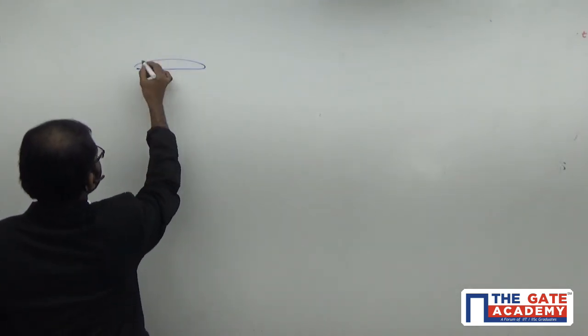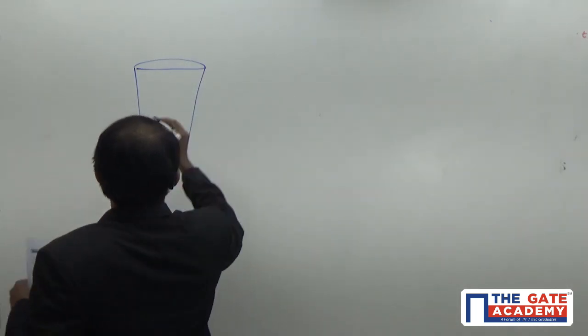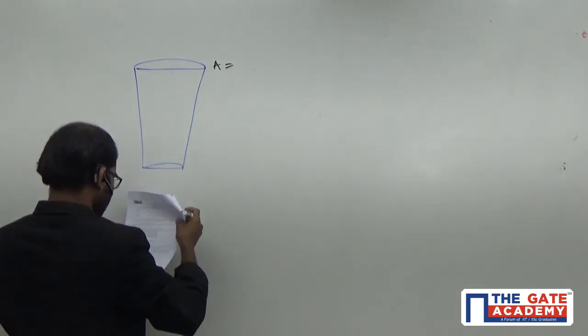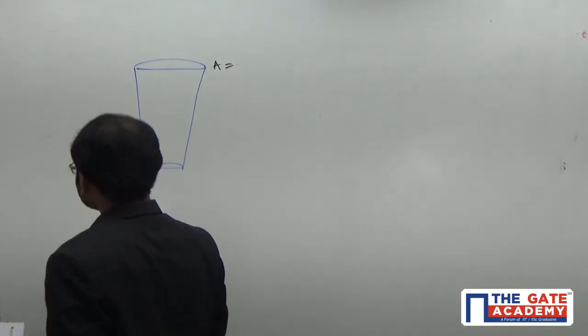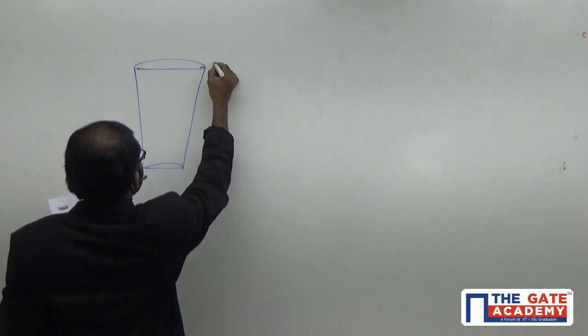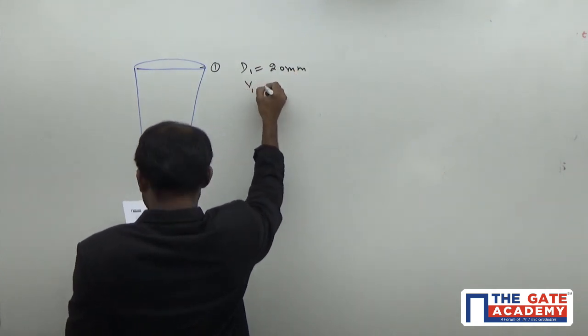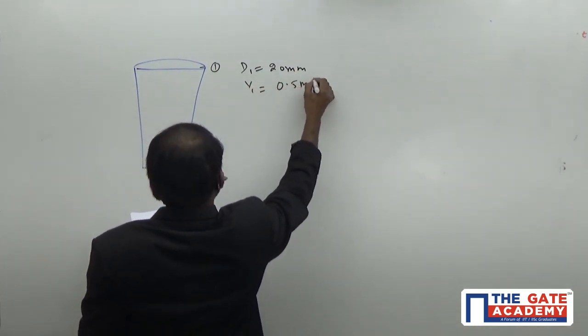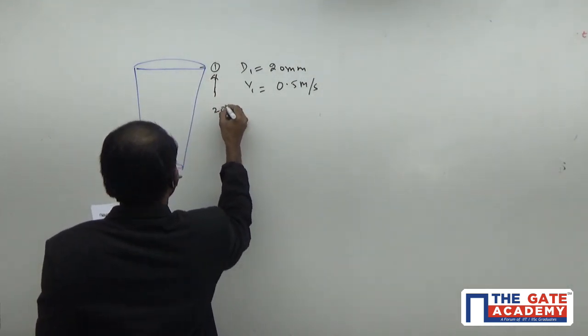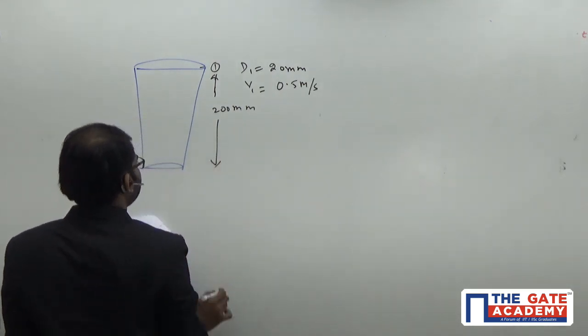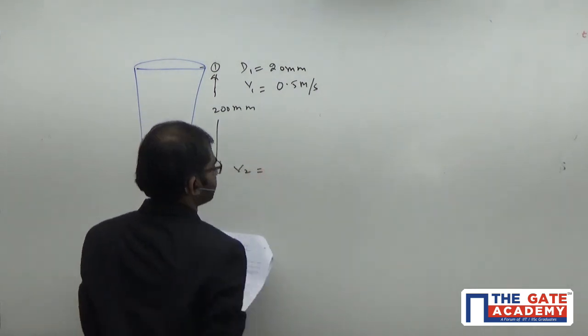So, let's take the sprue to be like this. At the top, area is given by... At the top here, area is not given, diameter is given. Diameter is equal to, let's take the point as 1, so d1 is equal to 20 mm, v1 is equal to 0.5 meter per second, and height is given by 200 millimeters. In this case, we need to find out the velocity v2.